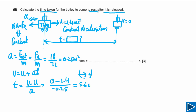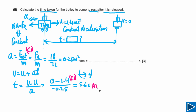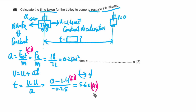This question has three marks: the first for writing a = F_net / m, the second for completing the calculation correctly, and the third is the answer mark for obtaining 5.6 seconds.